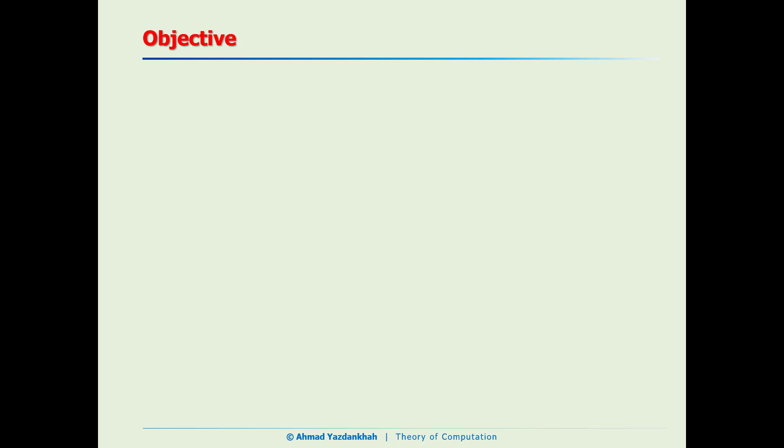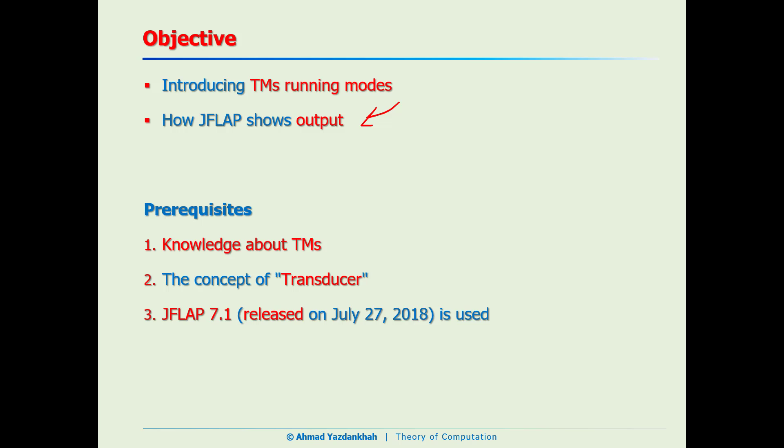Let's see what is the objective. In JFLAP we can run Turing machines in two different modes. What are they and what is the difference? So far we ran Turing machines for just accepting and rejecting the strings, but we know that we can do more with Turing machines. For example, we can simulate functions. If so, then we would need to know how JFLAP shows the output.